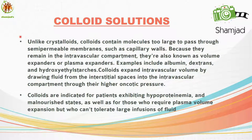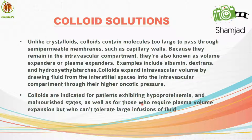Next, colloid solutions: Unlike crystalloids, colloids contain molecules too large to pass through semipermeable membranes such as capillary walls. Because they remain in the intravascular compartment, they are also known as volume expanders or plasma expanders. Examples include albumin, dextrans, and hydroxyethyl starches. Colloids expand intravascular volume by drawing fluid from the interstitial spaces into the intravascular compartment through their higher oncotic pressure. They are indicated for patients with hypoproteinemia and malnourished states, as well as those requiring plasma volume expansion who cannot tolerate large fluid infusions.